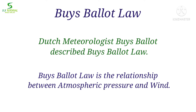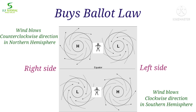Now let's learn about Buys-Ballot's law. Buys-Ballot's law describes the relationship between atmospheric pressure and wind. Dutch meteorologist Buys-Ballot described this law. According to him, if a person stands in the northern hemisphere with their back to the wind, then atmospheric pressure will be low to their left side and high to their right side, because wind blows counterclockwise as it moves from high pressure to low pressure. Whereas if the person stands in the southern hemisphere with their back to the wind, atmospheric pressure will be high to their left side and low to their right side, as wind blows clockwise from high to low pressure. All of this happens due to Coriolis force.